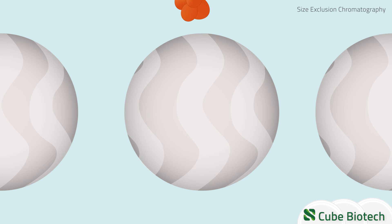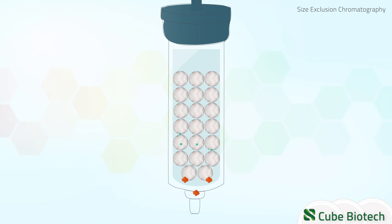When the solution is run through the column, large proteins are able to migrate past the beads the quickest, as they are unable to enter any of the pores. Small proteins, on the other hand, diffuse into all the pores and need to wind their way through the inside of the beads. This leads to a slower migration, and thus they will be eluted last.